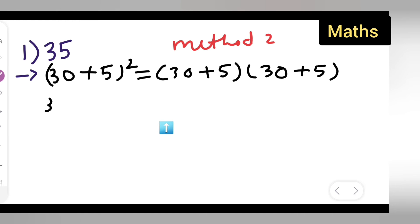Then what you will do is 30(30+5) + 5(30+5). What you have done is multiplied 30 with this term, plus 5 into the entire term.